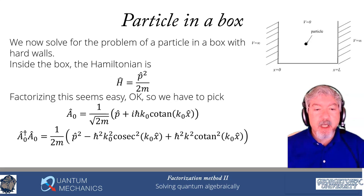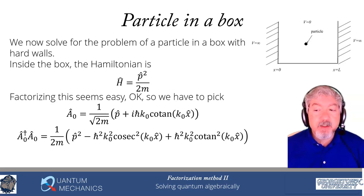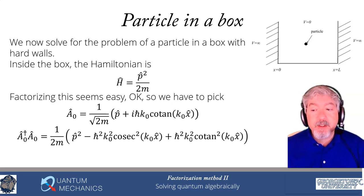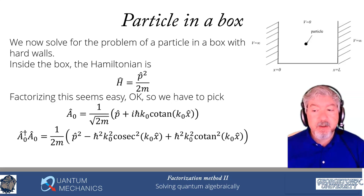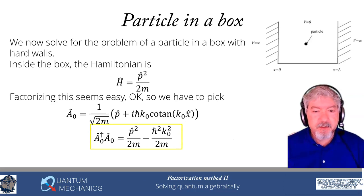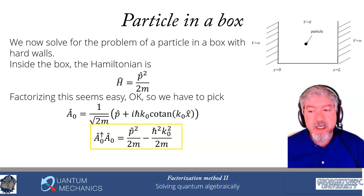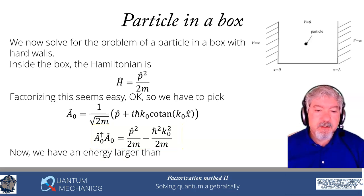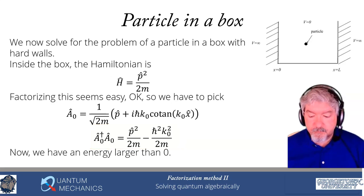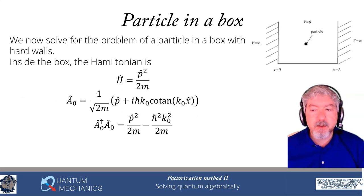Now, −csc²(k0x) + cot²(k0x) = −1/sin² + cos²/sin² = (cos²−1)/sin² = −sin²/sin² = −1. So that whole thing equals a number. I get H = A0†A0 + p²/(2m) − ℏ²k0²/(2m), meaning E0 = ℏ²k0²/(2m). That minus sign is critical: E0 is positive, as it must be. The energy is ℏ²k0²/(2m) > 0.